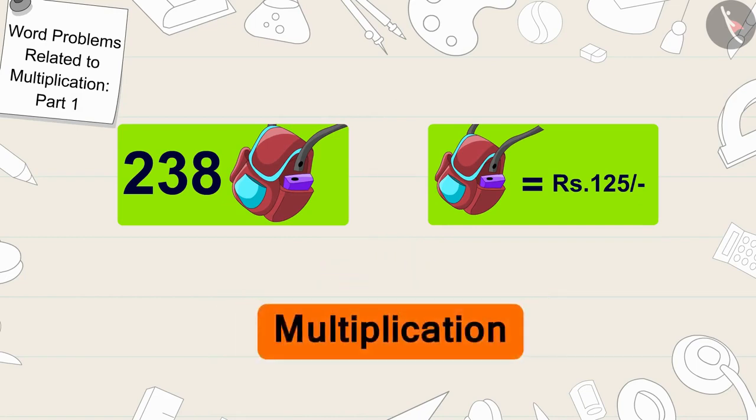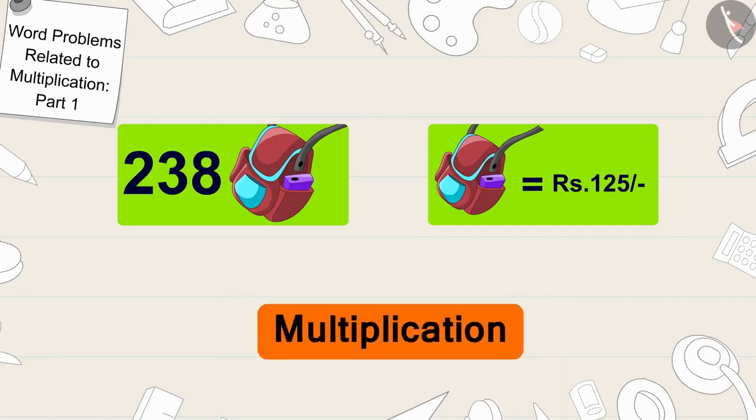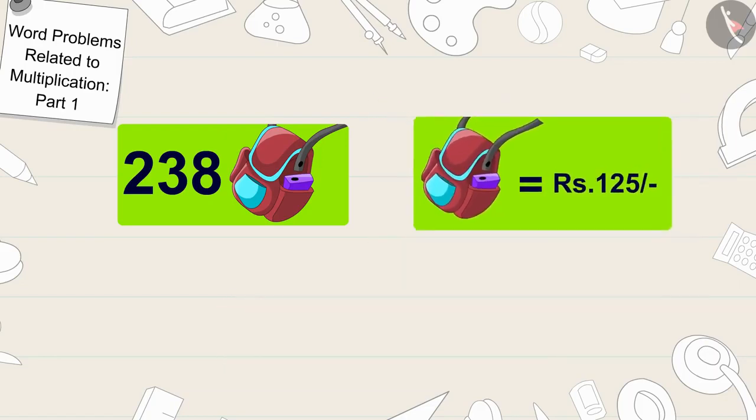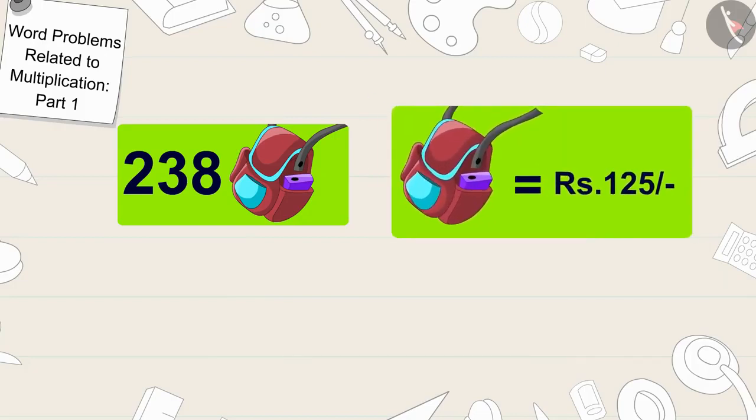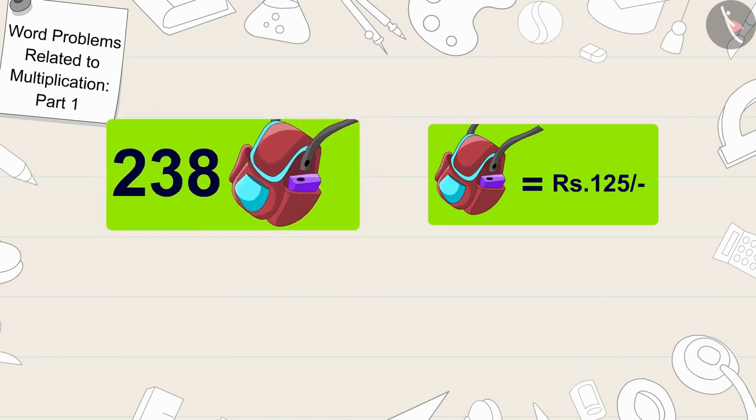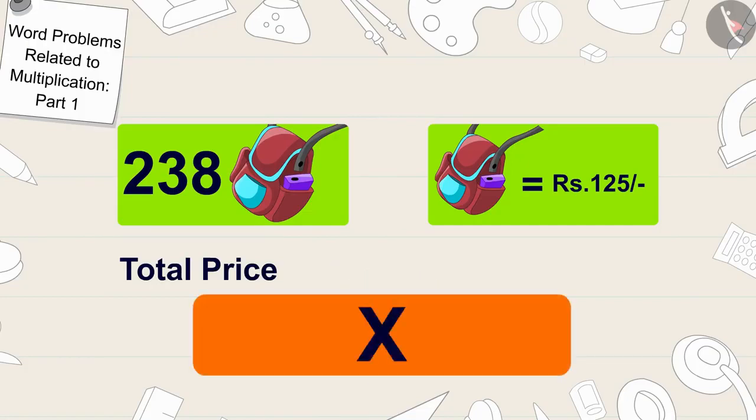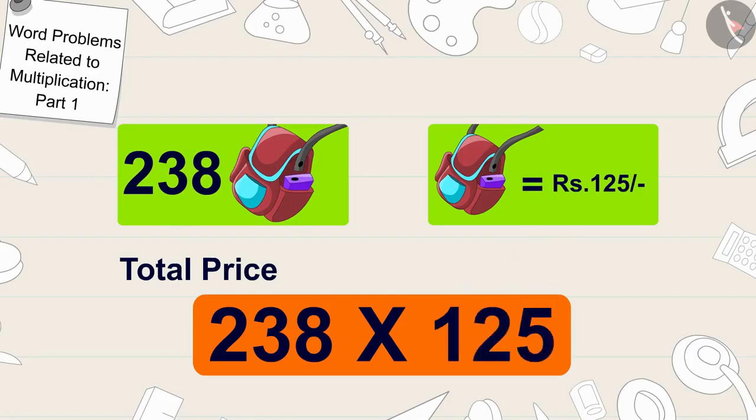Exactly, the process of multiplication. The cost of one bag here is 125 rupees and we have to find out the total price of 238 bags, so we will multiply 238 by 125.